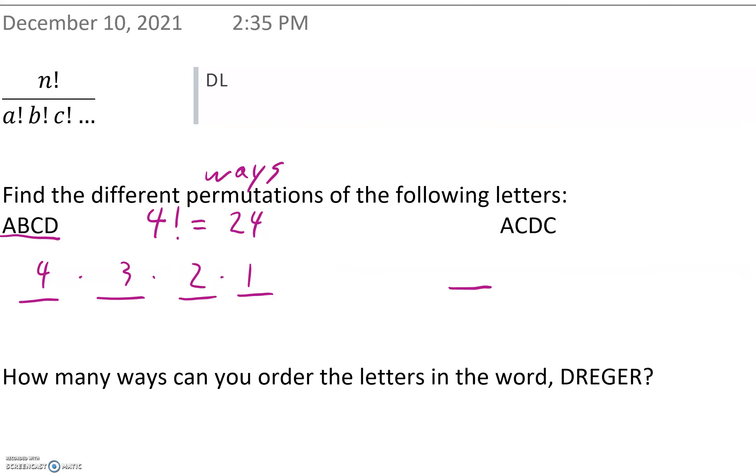Over here, not quite as straightforward, right? If we choose this one for our first one, we have three choices. If we choose this one, we only have two choices. If we choose this one, now we only have one choice. So this is not nearly as straightforward because it depends on what you choose first.